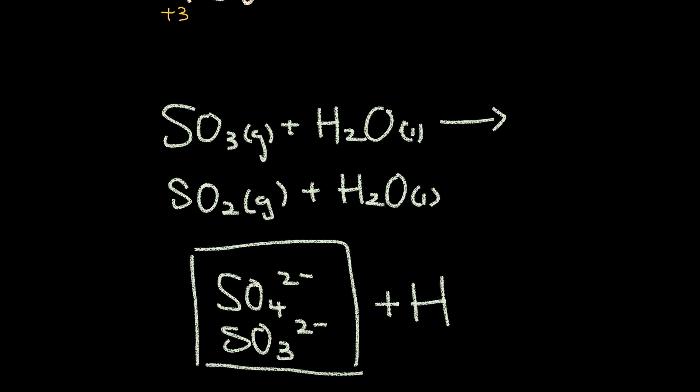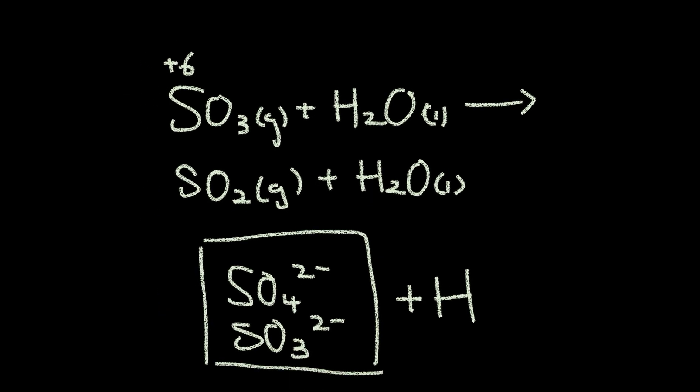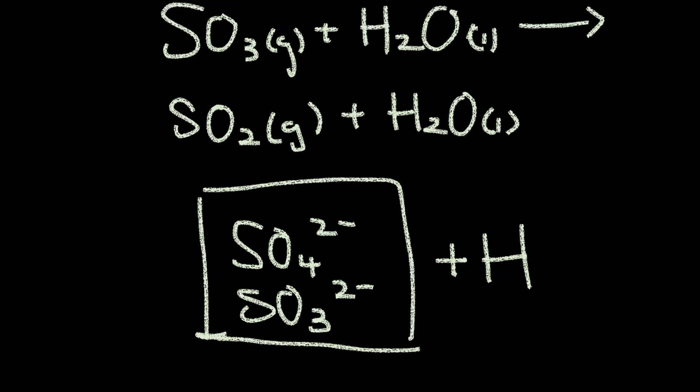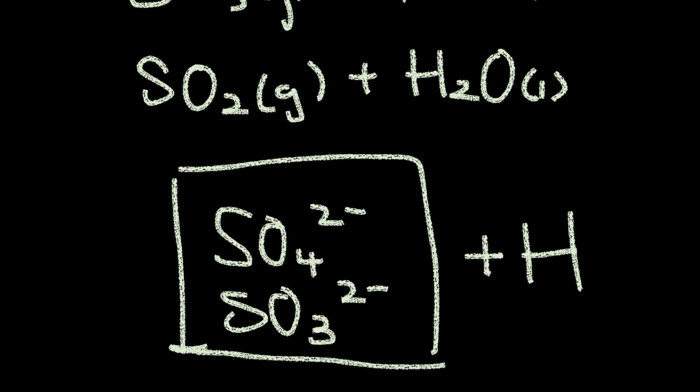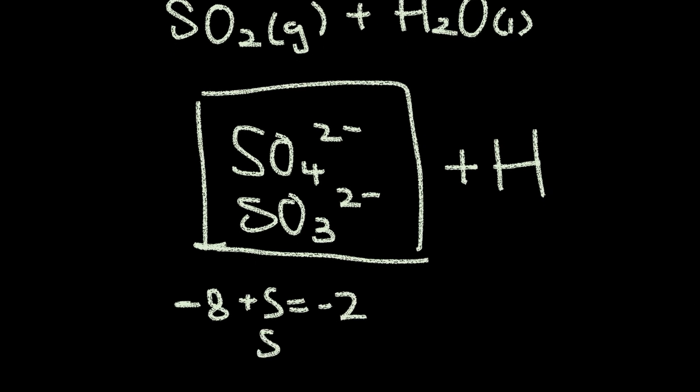Now we look at oxidation states. Oxygen has negative 2 times 3. That's negative 6. So this first sulfur has to have a state of positive 6 to balance out the negative 6 of oxygen. Now, which one of these oxyanions have an oxidation state of positive 6? Let's see the first one. There's 8 negative charge for oxygen plus sulfur is going to give us a negative 2 charge. So that must mean negative 2 plus 8.